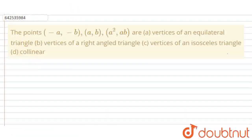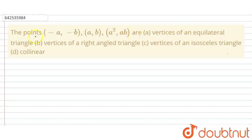Hello students, today's question is: the points (-A, -B), (A, B), and (A², AB) — are these vertices of an equilateral triangle, vertices of a right triangle, vertices of an isosceles triangle, or are they collinear? Now let's move to the answer.